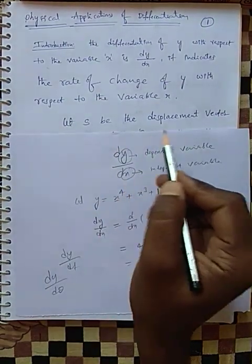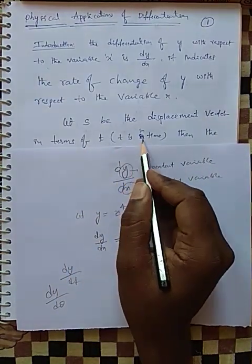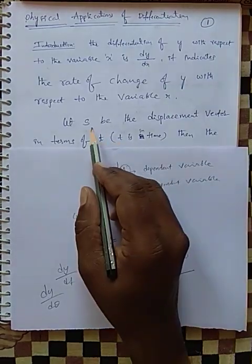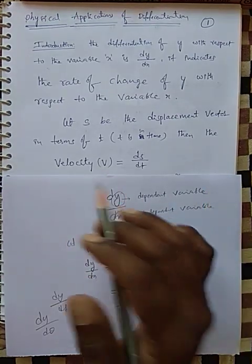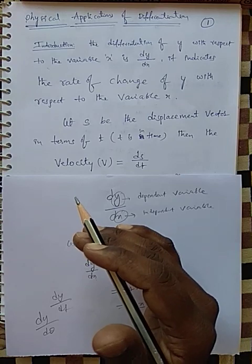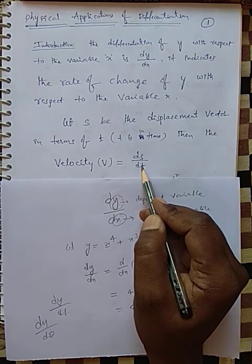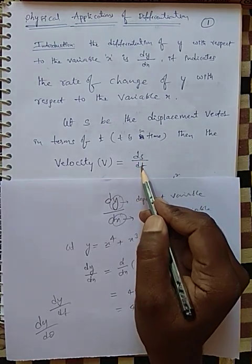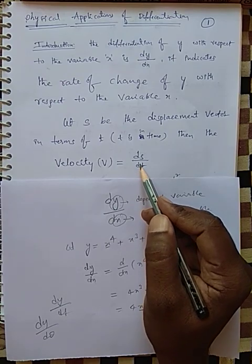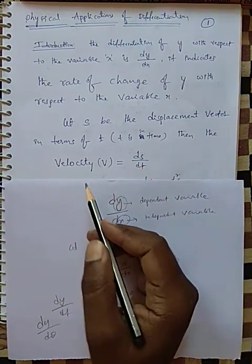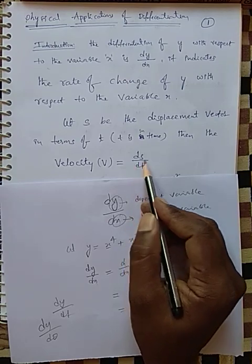Let s be the displacement vector in terms of t, where t is time. Then what is the definition of velocity? Rate of change in displacement is velocity — rate of change in s with respect to t. So velocity V equals ds by dt. That is the definition of velocity.